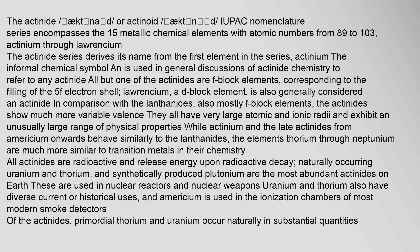The Actinide, or Actinoid, IUPAC nomenclature series encompasses the 15 metallic chemical elements with atomic numbers from 89 to 103.